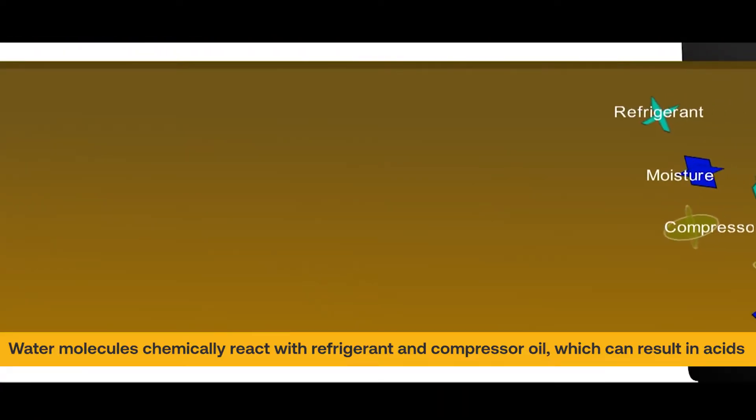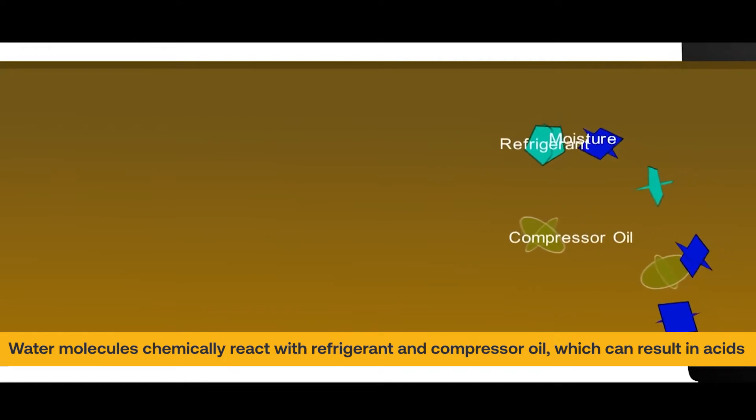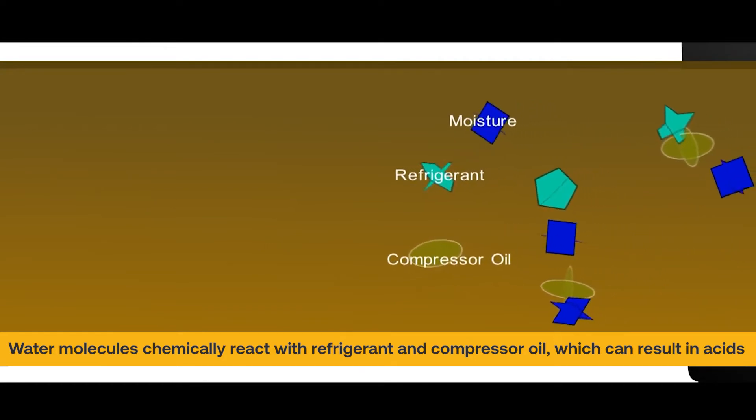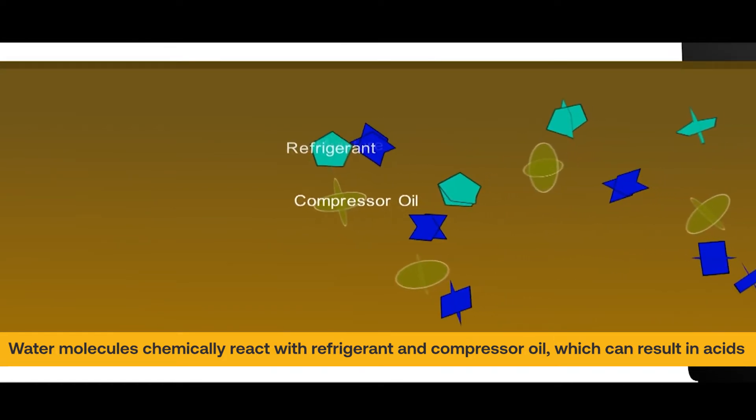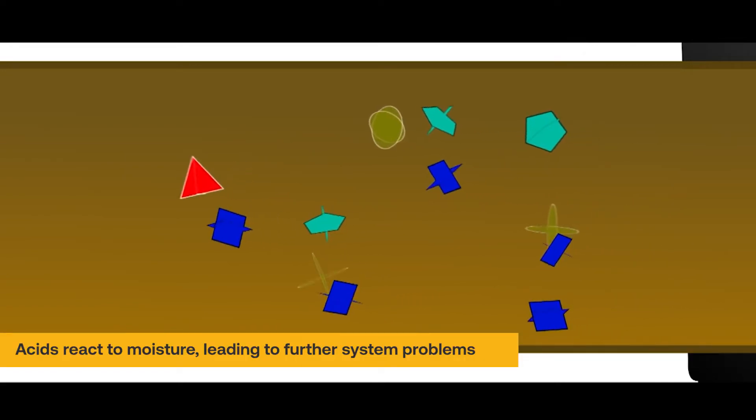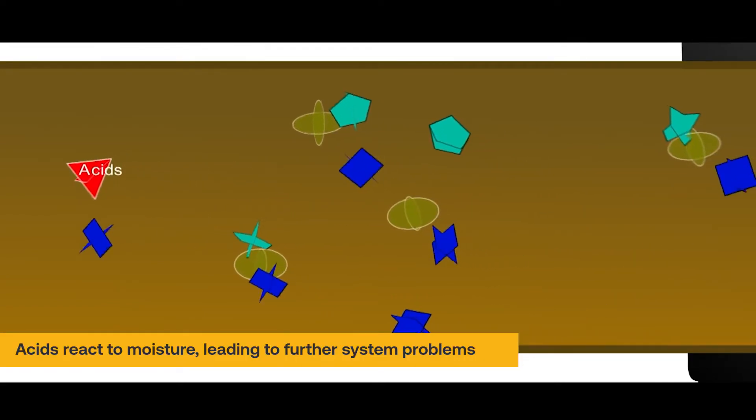Water molecules chemically react with the refrigerant and compressor oil, which can result in sulfuric, hydrochloric, and hydrofluoric acids. These acids then react with moisture, leading to further system problems.